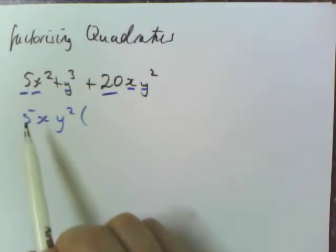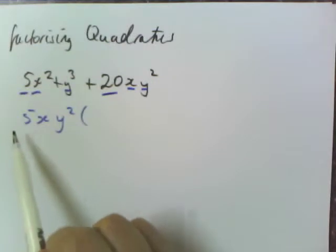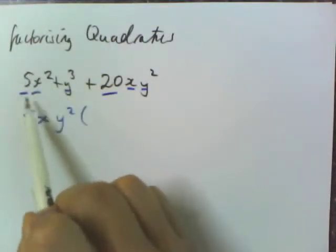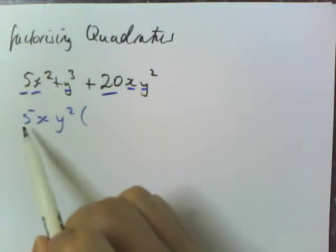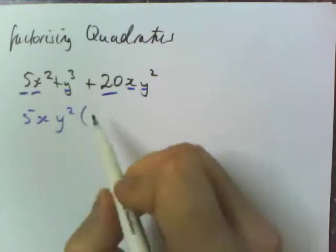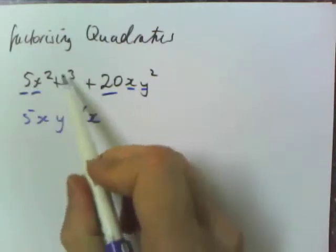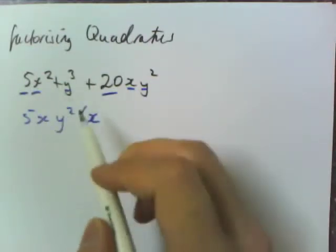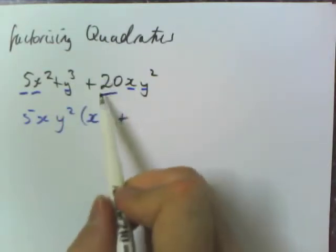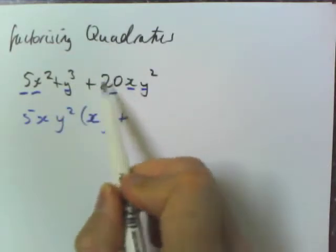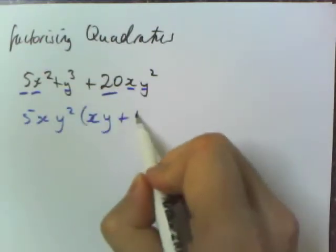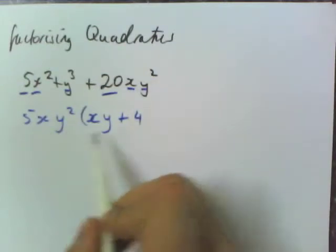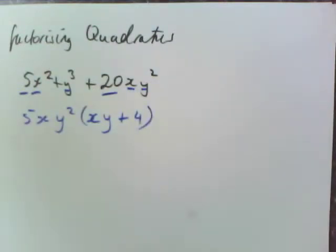It's just a matter of working out what's the same between them and now what's left. So if I'm dividing this by 5xy squared, 5 divided by 5 means there's going to be a 1, so we don't worry about writing it. x squared divided by x is going to leave us with an x. y cubed divided by y squared is going to leave us with a y. Now we're going to divide this 20xy squared divided by this. So 20 divided by 5 is going to leave us with a 4. x and y squared are just going to disappear. So that's that first factorisation.